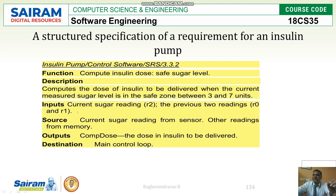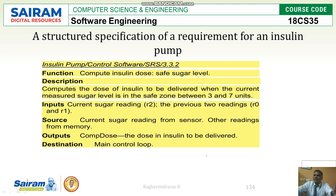The inputs are: the current sugar reading, the previous two readings that should be considered, and the sugar level check. The current sugar reading is taken from the sensor, and other readings are also taken from memory. The output is to compute the dose and deliver it, completing the main control loop. All the proper information about what this function should do is mentioned here.